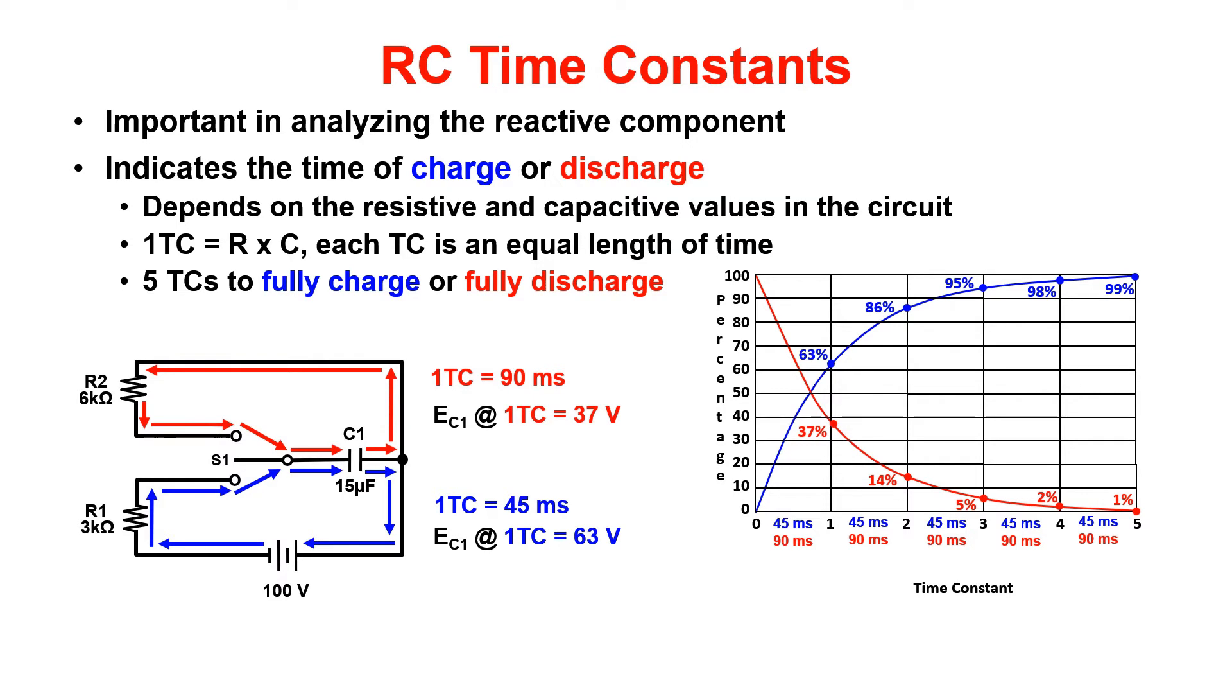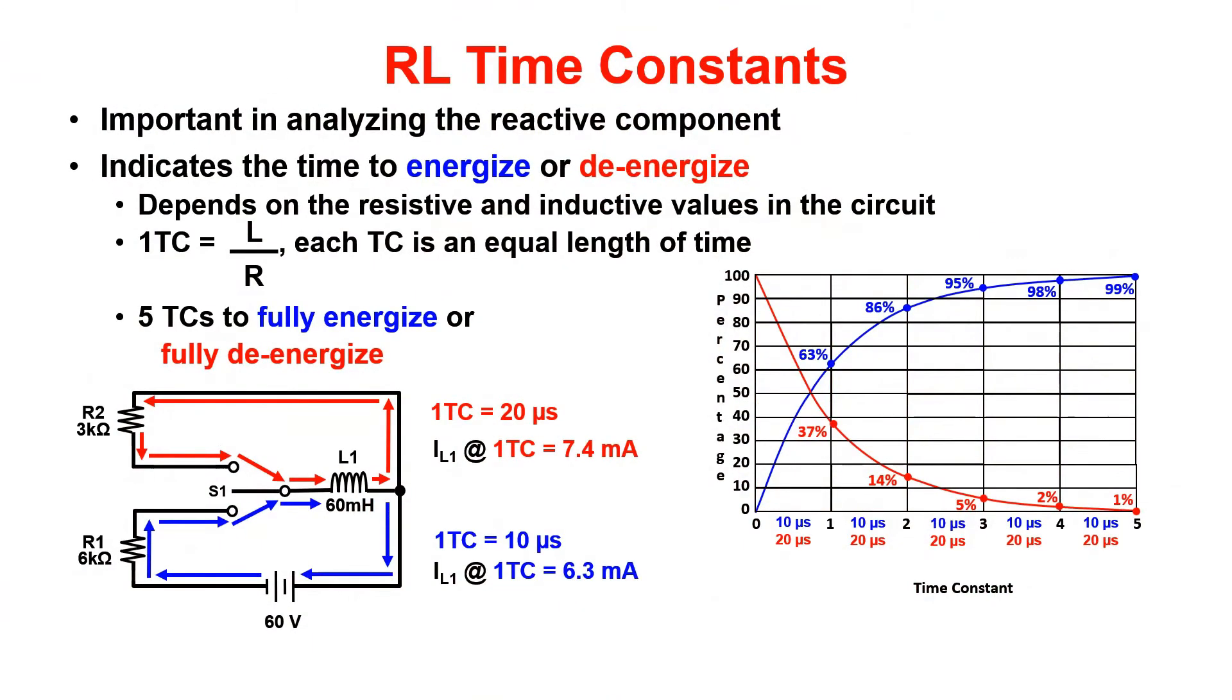Now to move on to RL time constants. RL time constants are very similar, but instead of finding the level of charge, we're concerned with the level of current growth and energized time, or de-energized time. Finding TC is L divided by R. Again, each TC is an equal length of time.